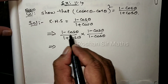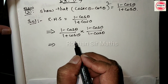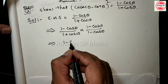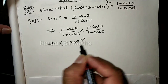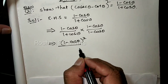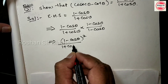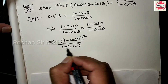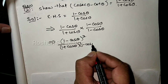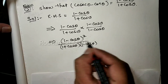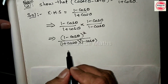अब next step: numerator में (1 minus cos theta) और (1 minus cos theta) — 2 time repeat हो रहा है। तो हम लोग इसको (1 minus cos theta) whole square लिखेंगे। अब denominator को as it is लिखेंगे: (1 plus cos theta) into (1 minus cos theta)।